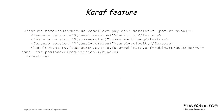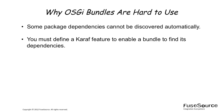Another limitation of the OSGI bundle format is that the bundle does not know how to find and install its dependencies — that is, any dependencies must already be present in the OSGI container. The usual way to get around this limitation is to define a Karaf feature for the bundle, which enables you to define a bundle and its dependencies as a single deployment unit. In summary, OSGI bundle packaging suffers from two limitations: some package dependencies cannot be discovered automatically, and you must define a Karaf feature to enable a bundle to find its dependencies.